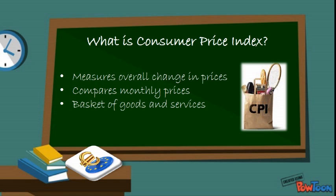It does this by collecting approximately 53,000 prices each month and comparing these to the corresponding prices from the previous month. As everyone has different tastes and spending habits, the CPI measures prices for a huge assortment of items. Not only does the Consumer Price Index measure prices for goods, including food, clothing,